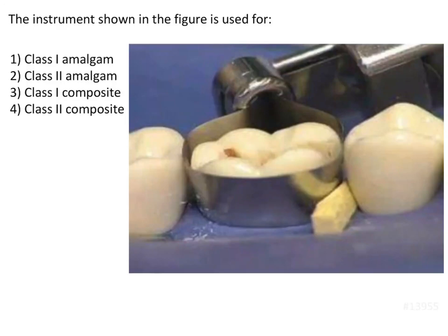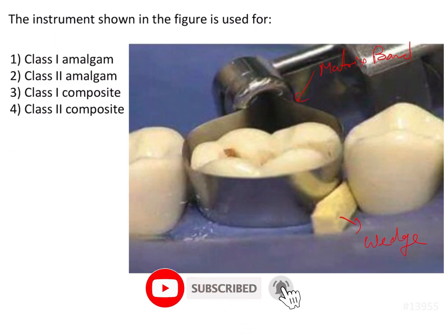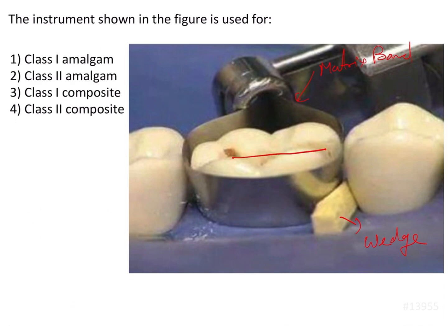The instrument shown in the figure is a matrix band and wedge arrangement. This whole setup is used for restoring the missing wall. The occlusal and proximal aspects are involved, making this a Class 2 preparation, where we are going to perform a conventional Class 2 amalgam restoration.